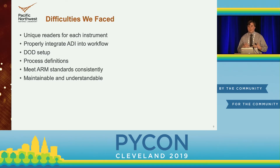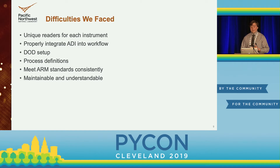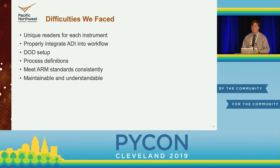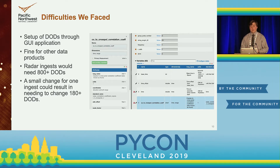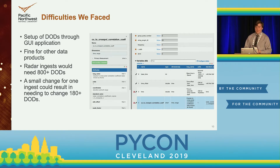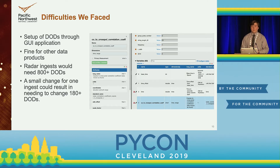Some of the difficulties we faced while creating the radar ingest: we needed unique readers for each of the instruments, we needed to properly integrate the data integrator into our workflow, we needed to set up data design specifications and process definitions, and we needed to consistently meet our standards — all while maintaining an understandable workflow and code structure for future maintenance. Normally, we would set up data design specifications through a GUI web application, which is fine for other data products that may only have a couple of DODs. But the radar ingests would need more than 800 DODs, and a small change — such as changing a variable name or units — could require changing over 180 of these in the worst case.